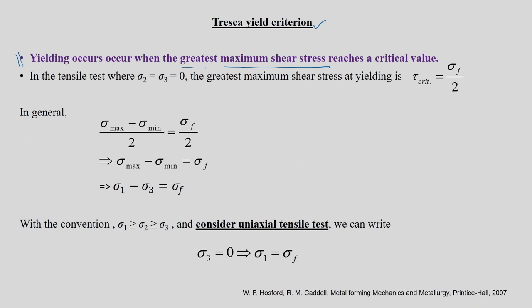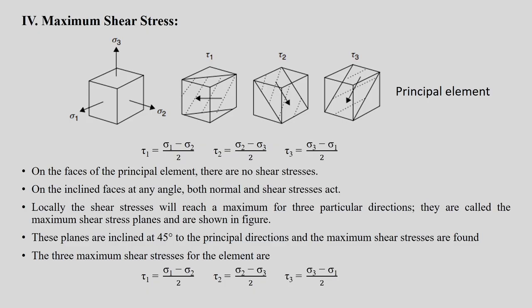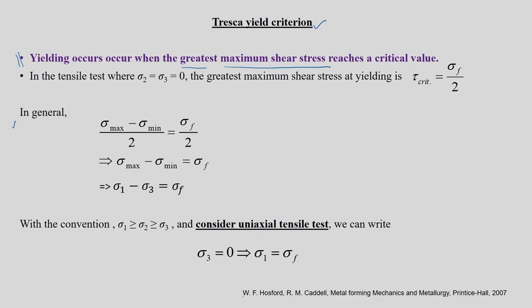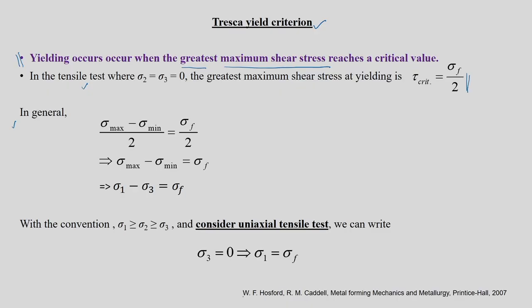In general, we can write: tau_1 = (sigma_1 - sigma_2)/2, tau_2 = (sigma_2 - sigma_3)/2, and tau_3 = (sigma_3 - sigma_1)/2. We pick up sigma_max minus sigma_min divided by 2. The critical value can be obtained from a uniaxial tensile test where sigma_2 and sigma_3 are zero. Substituting gives sigma_1/2 only, and we call that sigma_f, so tau_critical = sigma_f / 2.